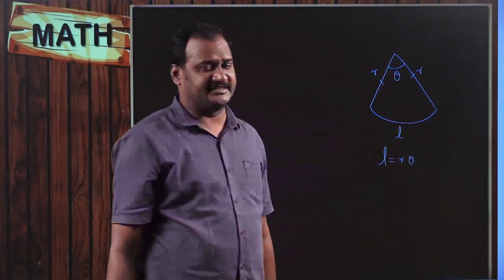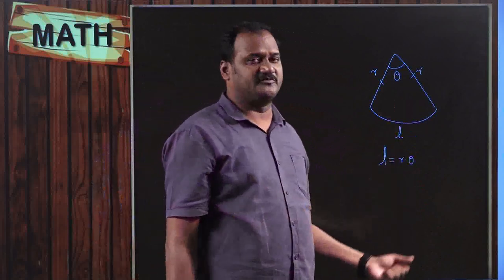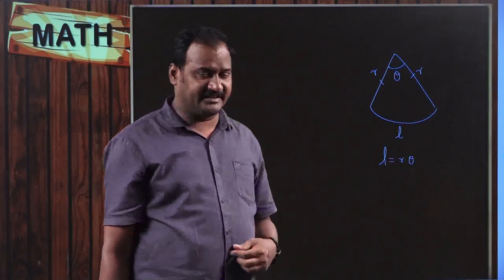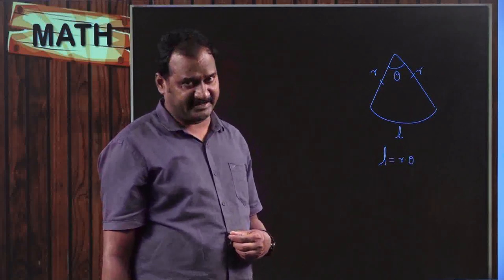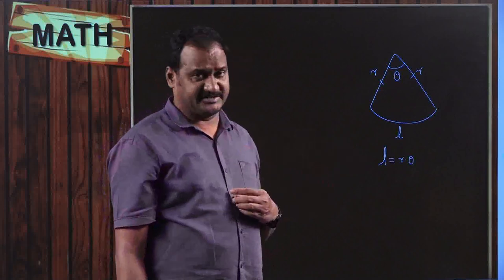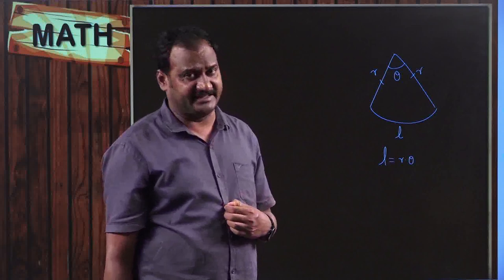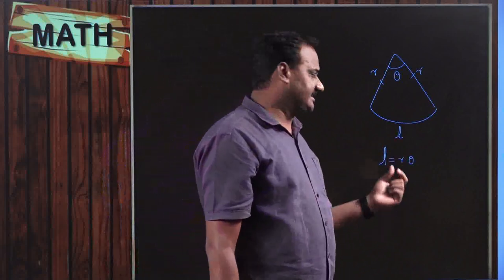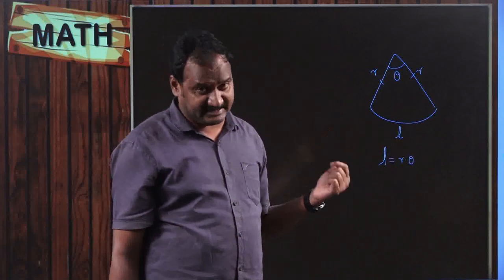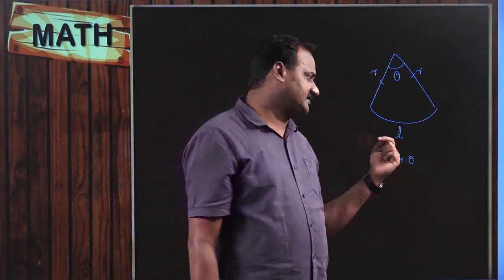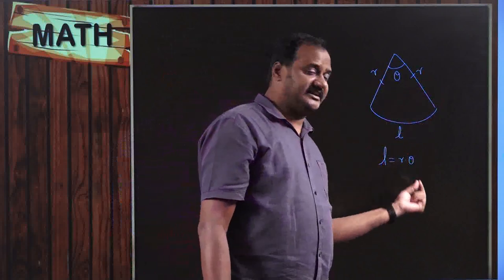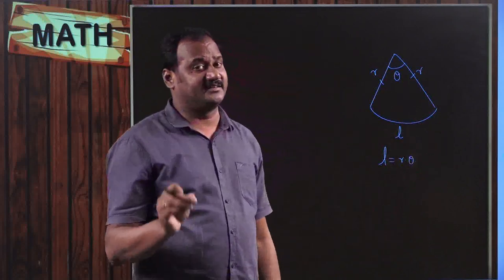The length of arc equals radius times θ, but exclusively θ must be measured in radians. You will learn about radians in trigonometry. So the relation between l, r, and θ is l = rθ, where l is the length of the arc, r is the radius, and θ is the angle at the center measured in radians.